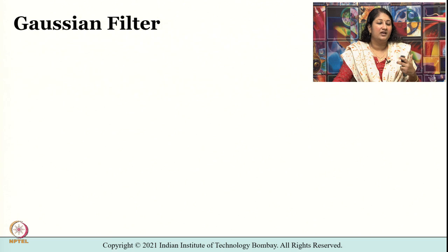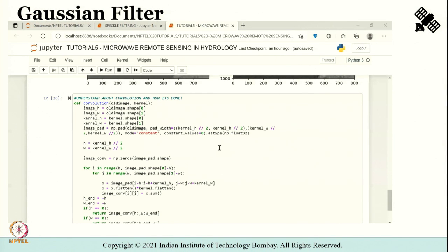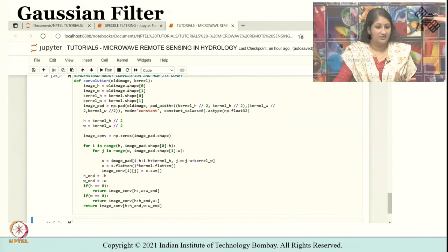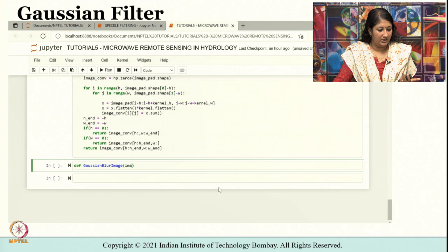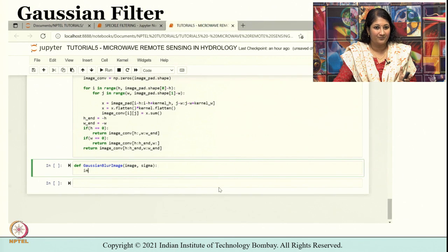What we did just now was define a function to perform spatial convolution from scratch. Our main aim for understanding convolution was to finally create a Gaussian filter. Now once we run the command and make sure there are no errors, let us try to define a Gaussian blur image function using def, which takes inputs as image and sigma.